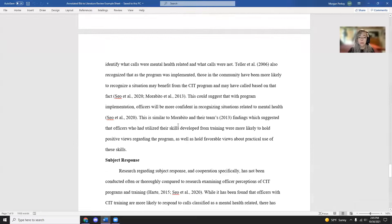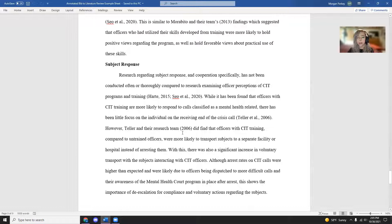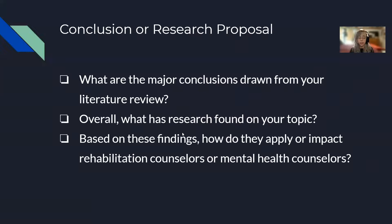This is where you really get to break apart the summary you have, pick the important parts, and bring them together to compare and contrast what research has to say on your topic — providing the reader with a general understanding of the major results. We do this because we want the major conclusions from the lit review, especially at the end, to lead to a final conclusion: overall, what has research found on your topic, and how does this relate to your proposal, question, or hypothesis?